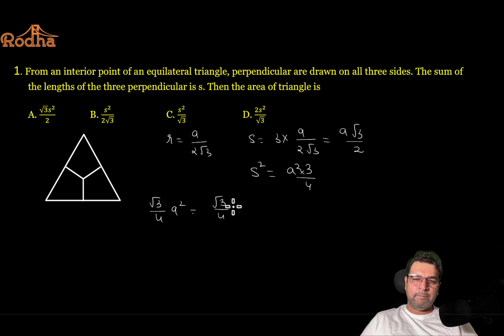I need area of triangle which is root 3 by 4 into a square. A square can be replaced with this. So root 3 by 4, a square will be 4 by 3 into S square. This is cancelled, root 3 will be cancelled, gives you S square over root 3. Check the options - option C.